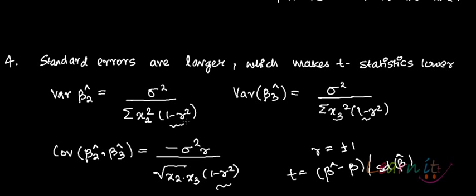If r equals 1 or −1, the expression (1 − r²) in the denominator becomes 0, making the variance infinite. The standard deviation is then also infinite, and since it is the denominator of the t-statistic, dividing by infinity makes the t-statistic negligible. That is the problem caused by ignoring multicollinearity.